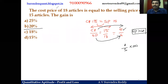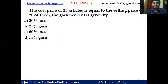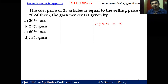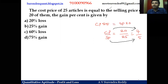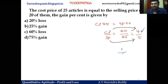One more question — be quick. CP of 25 articles is equal to SP of 20 articles — find the gain percent. The CP to SP ratio is 20 to 25, which simplifies to 4 to 5. For every 4 rupees of cost price, the selling price is 5 rupees. SP is more than CP, so it is a gain case — 1 rupee profit on 4 rupees cost price, which gives 25 percent gain.